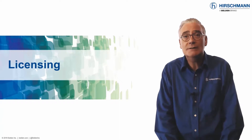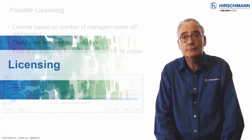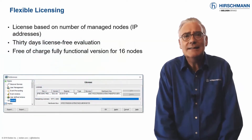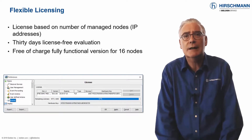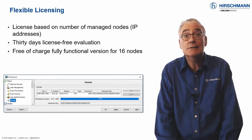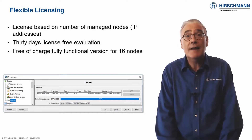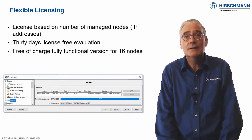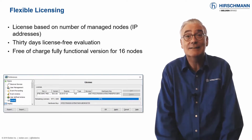Unlimited professional technical support is also available at no cost, without a contract. Licensing in Industrial HiVision is based on a simple concept. The price depends on the number of devices you want to supervise. Licenses are available in ranges, starting at 32 nodes and going up to 4096 nodes.